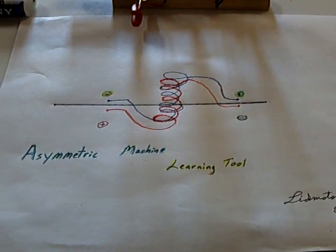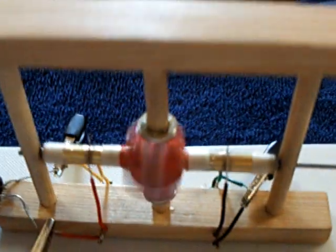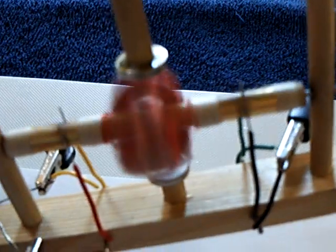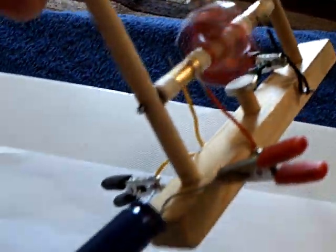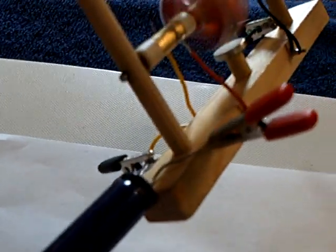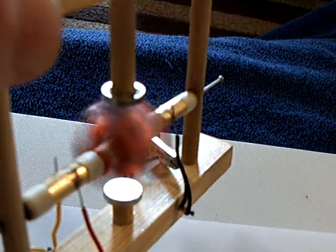Anyway, this is where I'm at with the asymmetrical machine. I'm Lid Motor, and this is the 3rd of August, 2012. And that's my little asymmetrical machine running right there on a capacitor. Like I say, that's a 10-farad, 2.3 volt capacitor making that thing work.